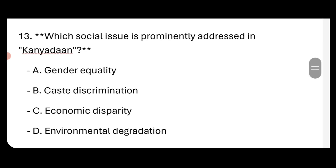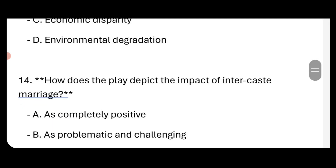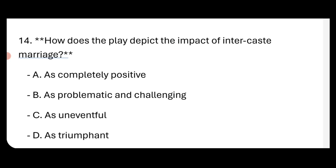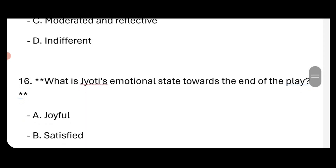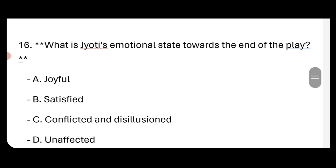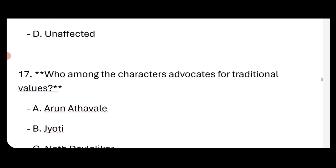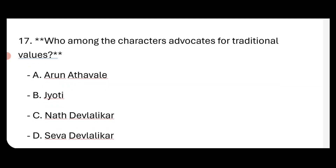Which social issue is prominently addressed in Kanyadaan? It is caste discrimination. How does the play depict the impact of inter-caste marriage? As problematic and challenging. What is Jyoti's emotional state towards the end of the play? It is conflicted and disillusioned. Who among the characters advocates for traditional values? It is Seva Devlalikar.